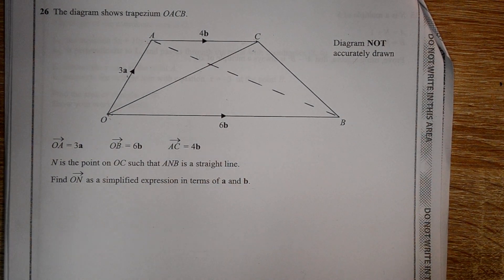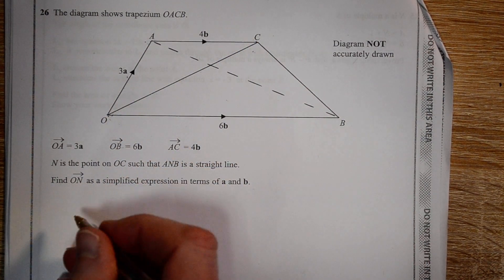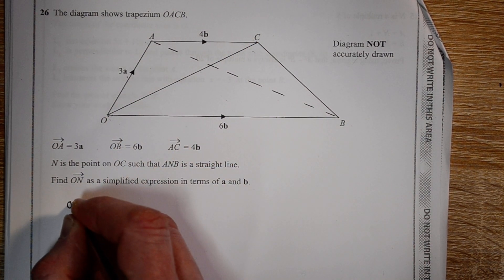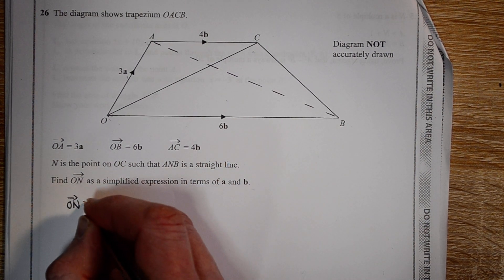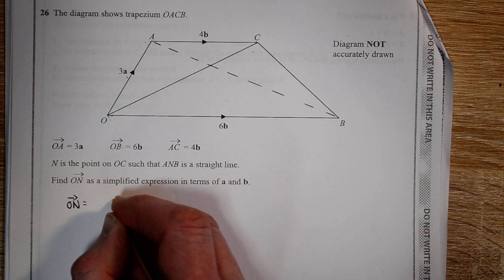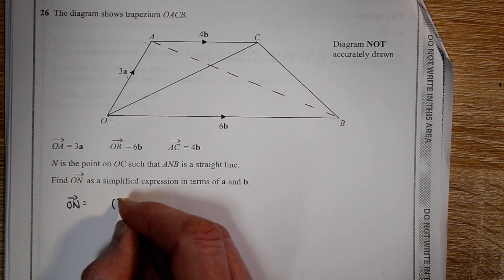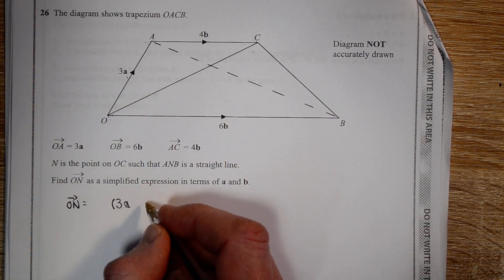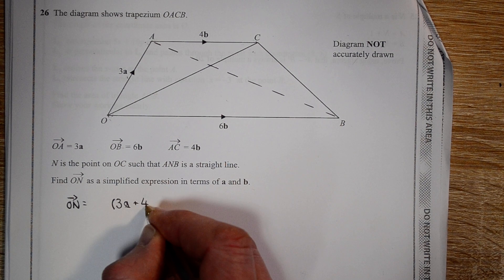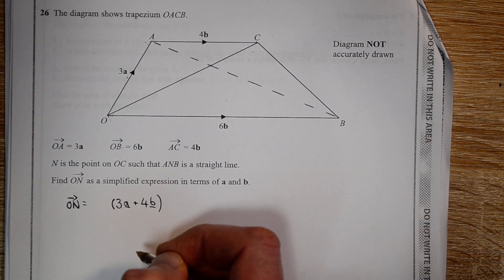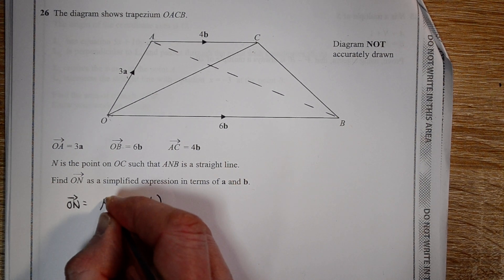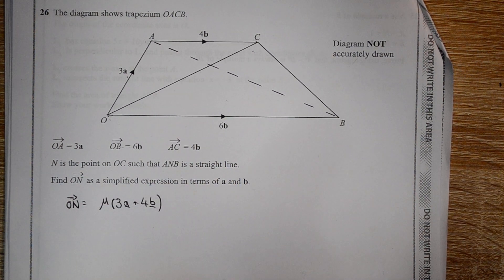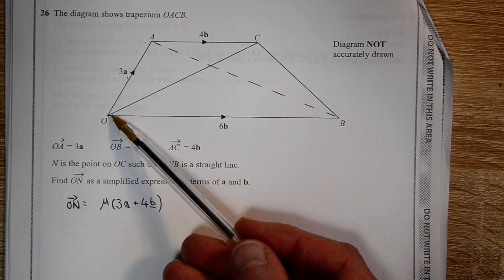First of all, we're told that it's somewhere on the line O to C. So O to N is some fraction of the way along O to C. So we'll write down O to C and then multiply it by a fractional constant. We don't know what the fraction is, but we'll call it mu. So that's going directly along from O to C.